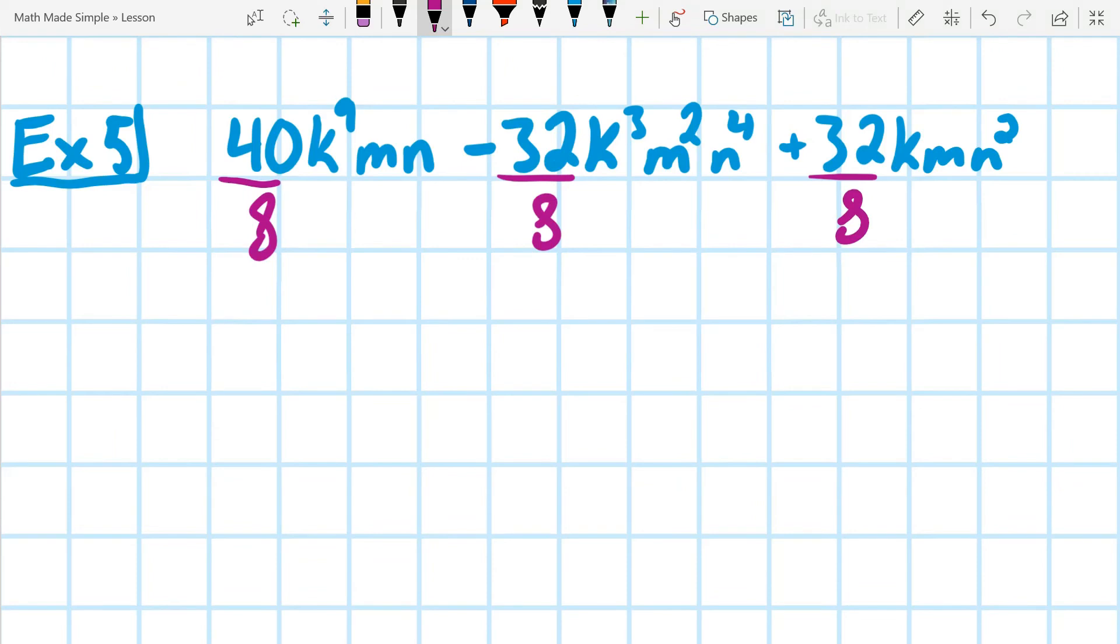Actually, that's going to do it for us because if I do 40 divided by 8, I end up with 5. And 32 divided by 8, I end up with 4, and I have 4 again. All right, so I took out an 8. So in parentheses, we're going to have all this mess. But on the outside, we're definitely going to have an 8.